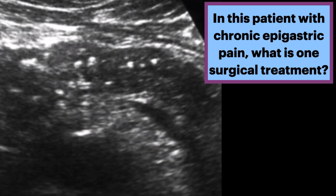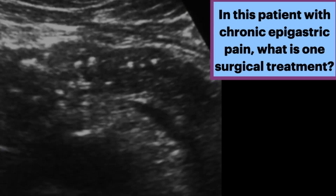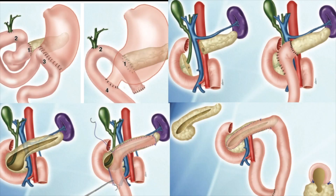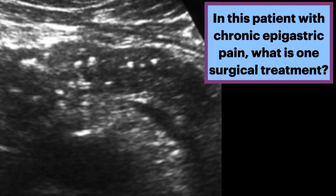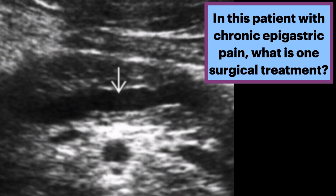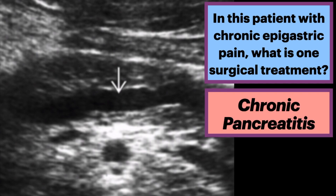In this patient with chronic epigastric pain, we have a transverse transabdominal ultrasound focused on the pancreatic parenchyma showing multiple echogenic foci consistent with calcifications. The arrow here shows a dramatically dilated duct. This is chronic pancreatitis.